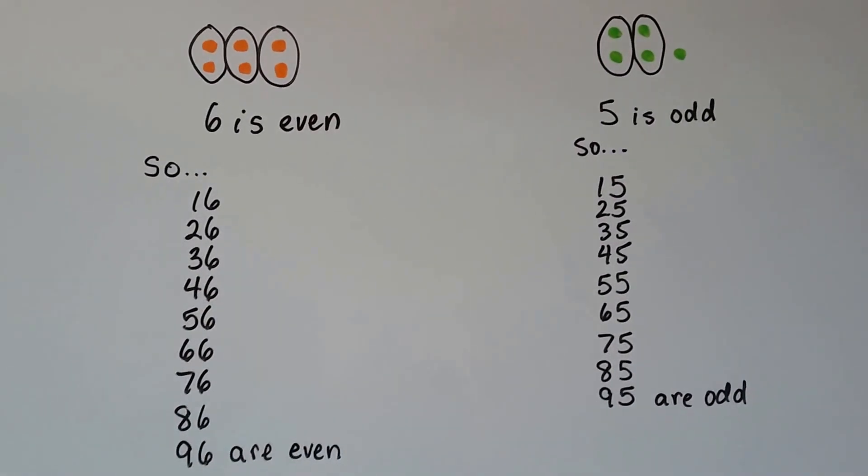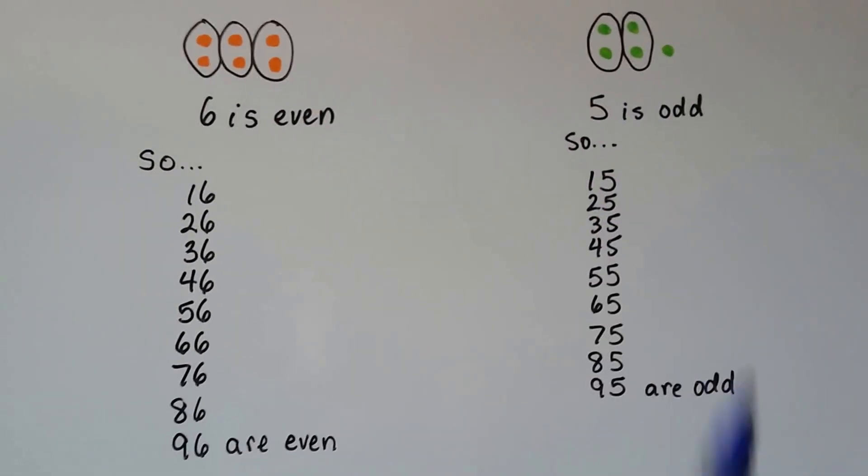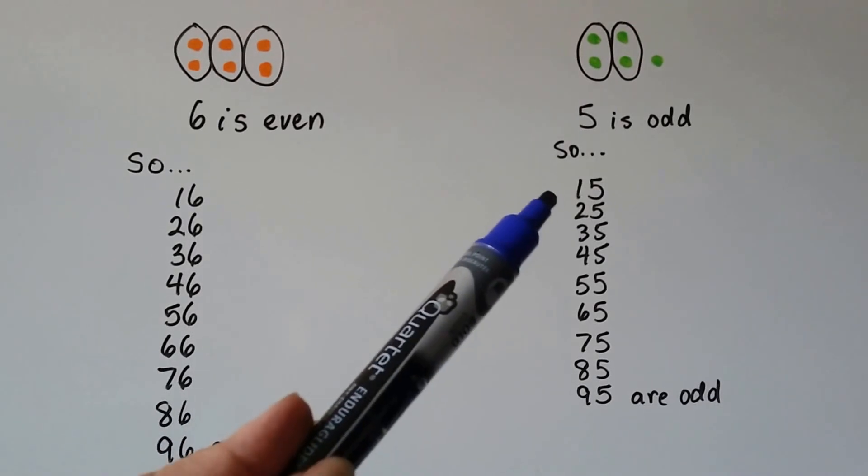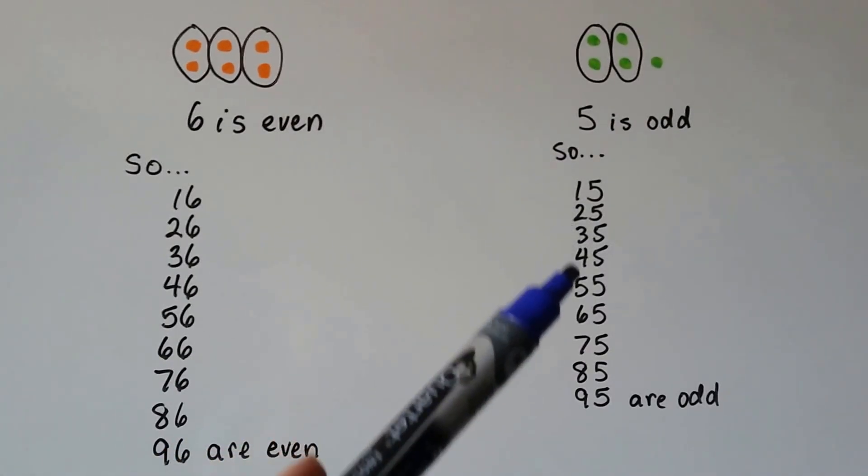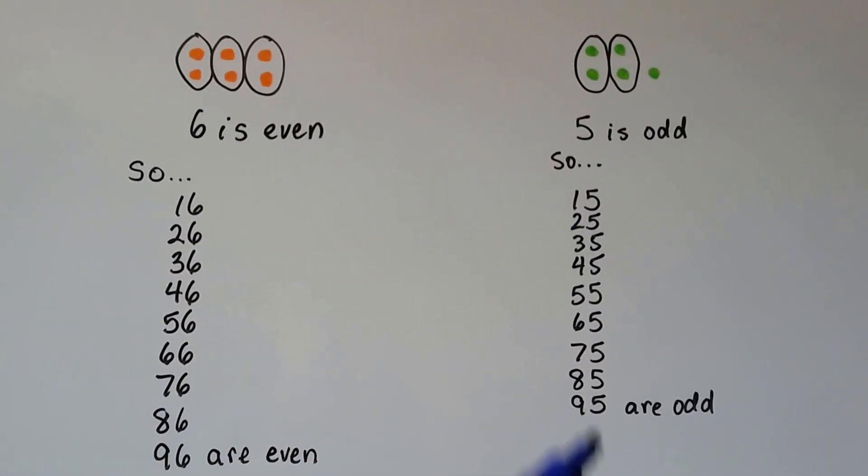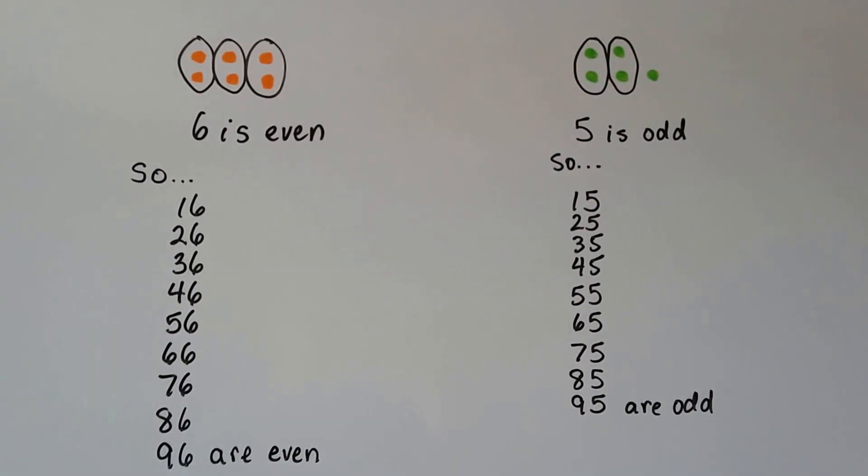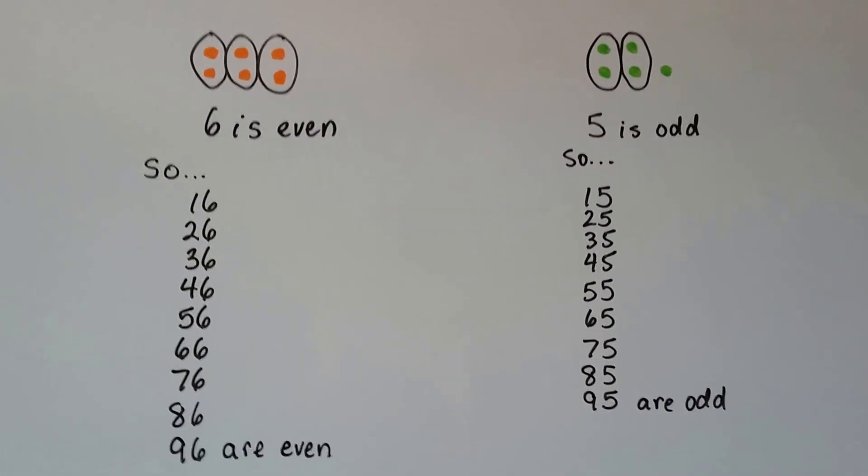5 is odd. We have one left over when we make pairs. So since 5 is odd, then all of these numbers are odd because they end with a 5, and 5 is odd.